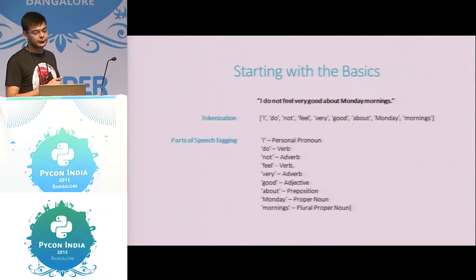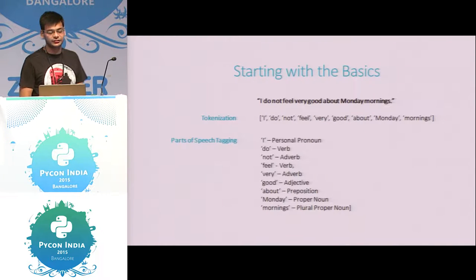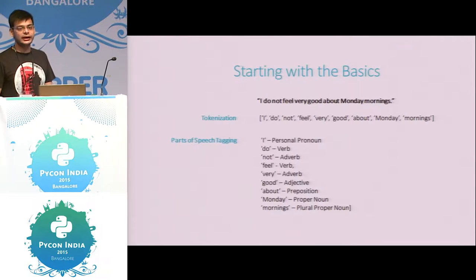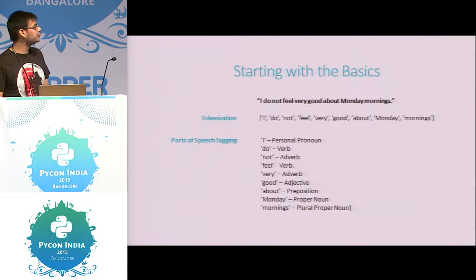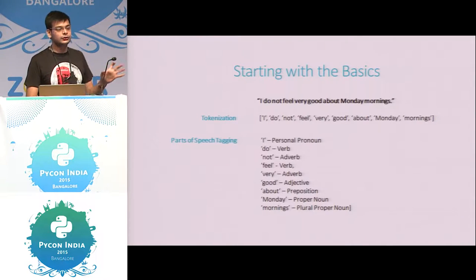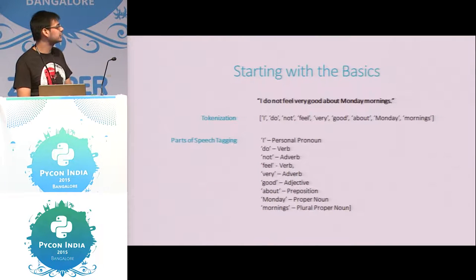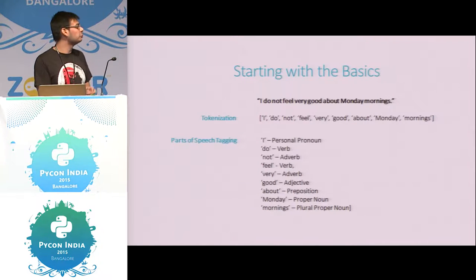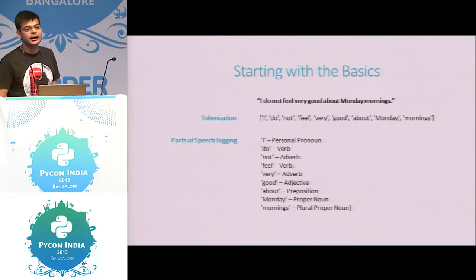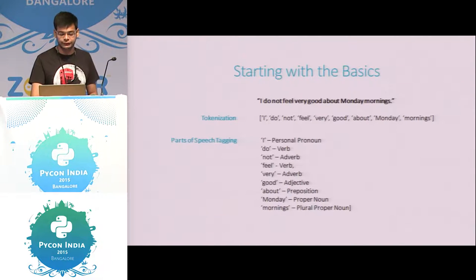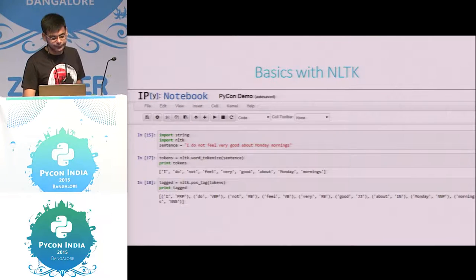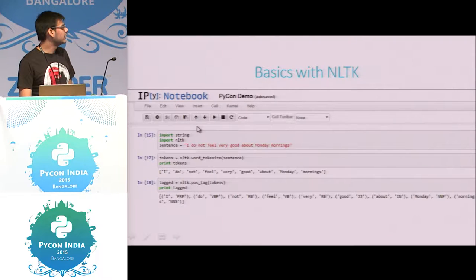Talking about some very basic terminology: if you have a sentence like 'I do not feel very good about Monday mornings,' tokenization is when you split it into individual words. Then there is part-of-speech tagging. You do not have to write maybe 10 or 20 lines — this can be done in a single line where you just pass an input sentence and it can tag what is a pronoun, what is a verb. You just import a library, give it a sentence, and here is the tokenized output and the POS tagging done directly.